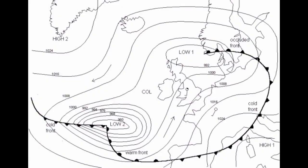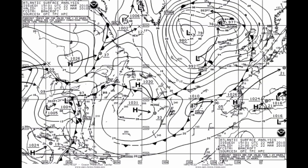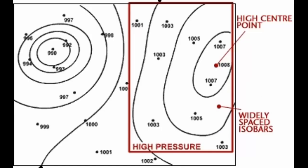The completed isobars usually reveal a few standard patterns. A set of curved isobars surrounding an area of low pressure reveals a depression, with the wind in the northern hemisphere blowing anti-clockwise around its center. A set of curved isobars surrounding a high pressure reveals an anti-cyclone, with the winds in the northern hemisphere blowing clockwise around its center. In the northern hemisphere, winds blow in a clockwise direction around the high pressure.